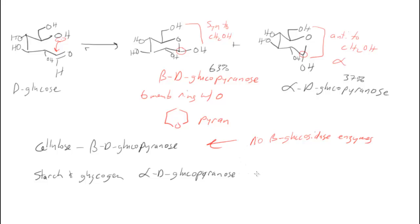However, starch, glycogen, amylose, amylopectin, all are based on alpha-D-glucopyranose. And we can break those down. And so we can use those for energy.